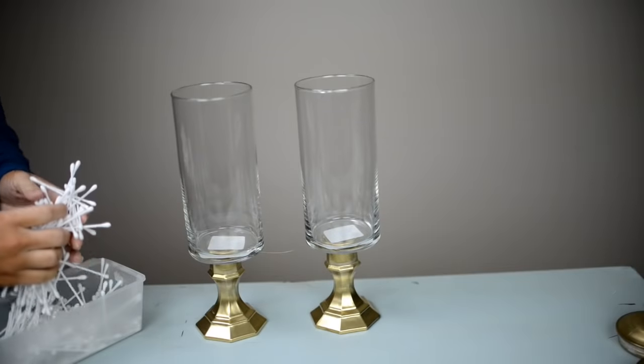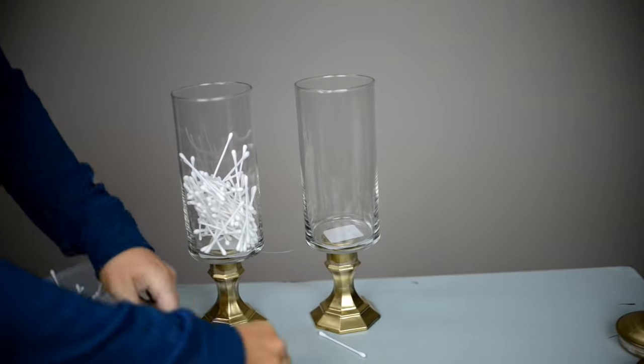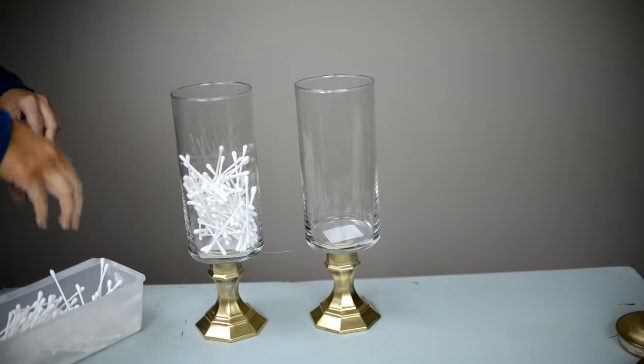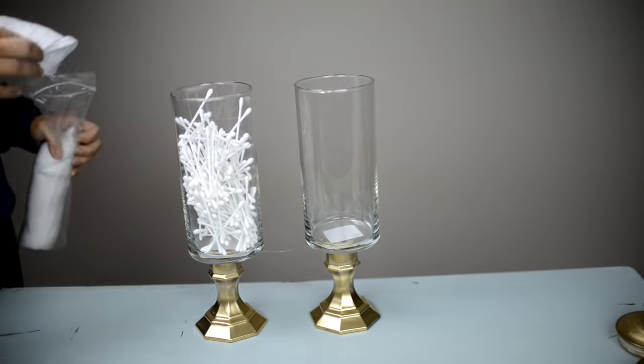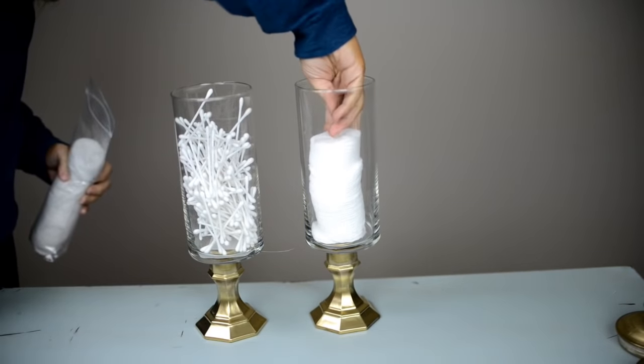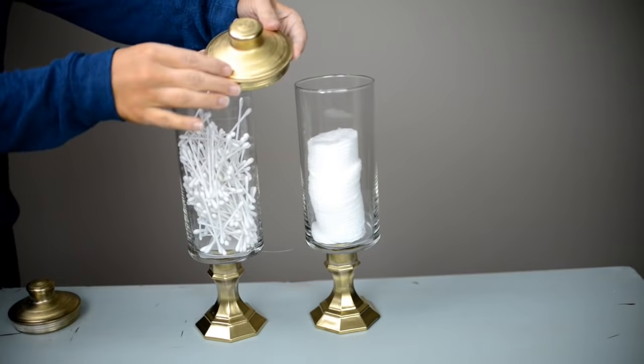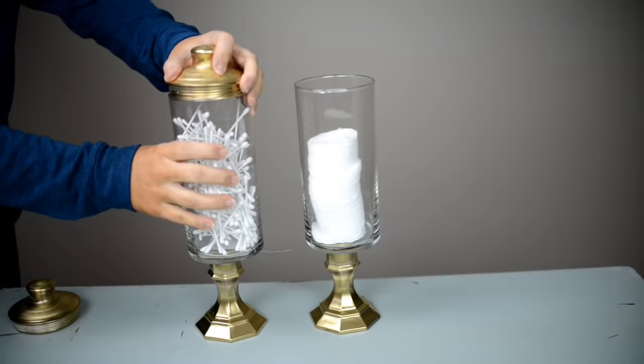From there, let it dry and then add in whatever toiletries you want. In one I'm putting Q-tips and the other I'm putting cotton pads, but you can use these for whatever you like to store in your bathroom. The next step is to put the lids on the top and they fit in so they'll hold your stuff in place.